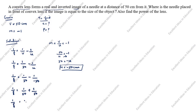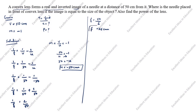So 1 by f equals 1 by 50 plus 1 by 50, which equals 2 by 50. Therefore f equals 50 by 2 equals 25 centimeters. Now we will find the power of the lens. The formula for power is P equals 1 by f, where f must be in meters.